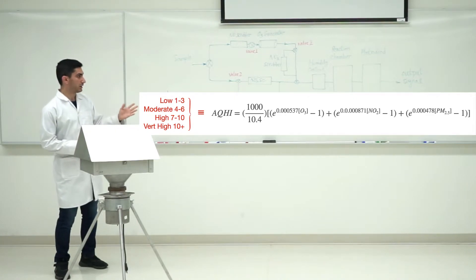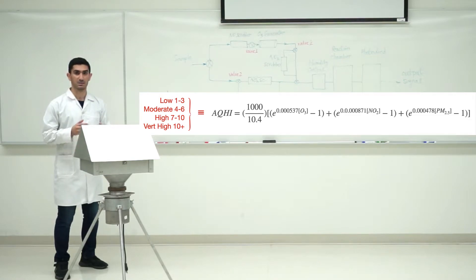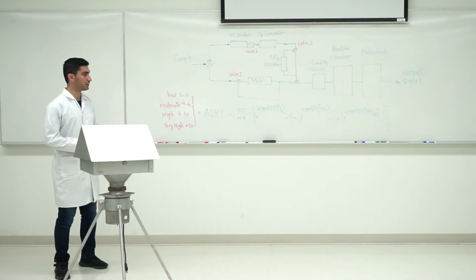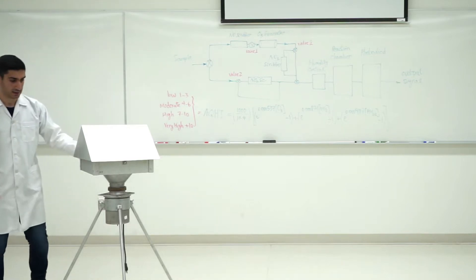Particulate matter is PM2.5, meaning particles with diameter less than 2.5 micrometers. To measure particulate matter, we're using a high volume sampler as shown here.